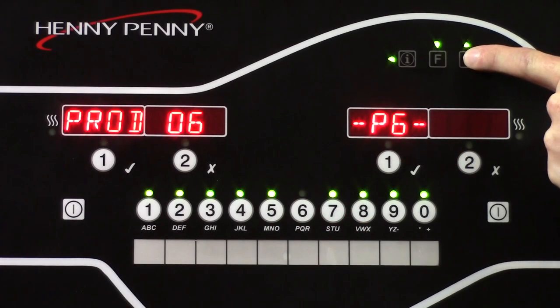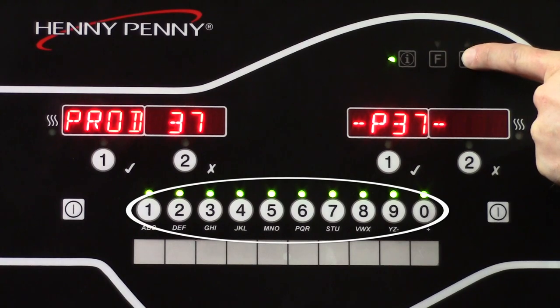The Evolutional E-Control can hold up to 40 products in its memory. 10 of those 40 products can be assigned to the buttons at the bottom of the control at any given time.